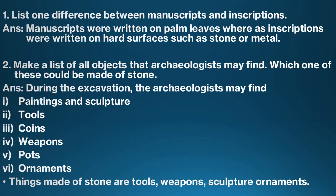Question 2: Make a list of all objects that archaeologists may find. Which one of these could be made of stone? Answer: During excavation, archaeologists may find paintings and sculpture, tools, coins, weapons, pots, and ornaments. Things made of stone are tools, weapons, sculpture, and ornaments.